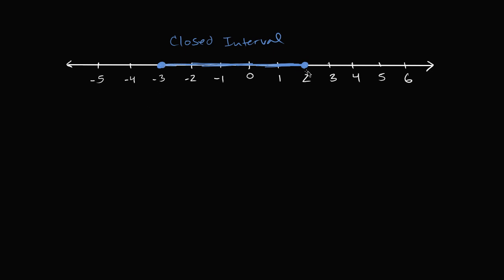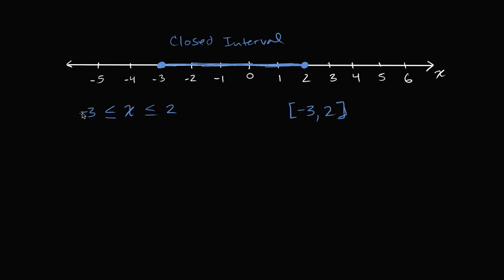There are multiple ways to talk about this interval mathematically. If this number line is showing values for x, I could say these are all the x's such that negative three is less than or equal to x is less than or equal to positive two. That tells us x could equal negative three and x could equal positive two, so it is a closed interval. Another way to depict this closed interval is to write it with brackets: negative three and two in brackets. These brackets tell us we include negative three and positive two in our interval.